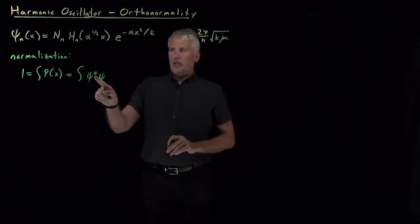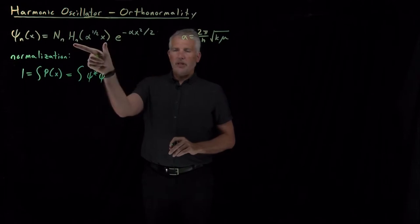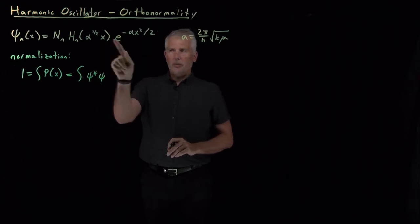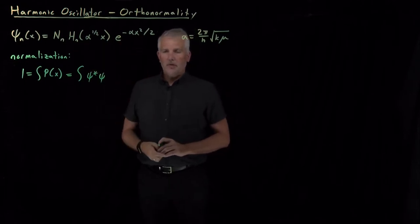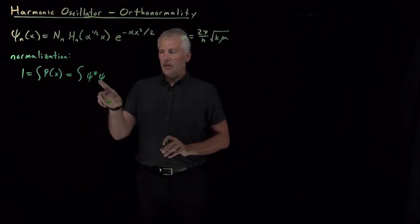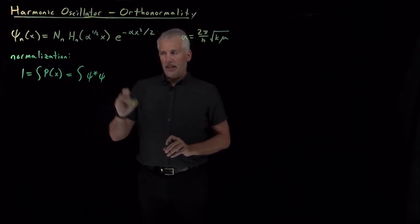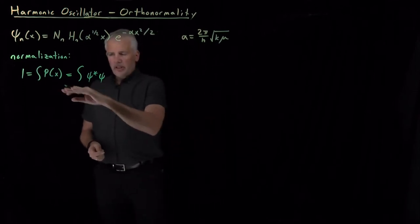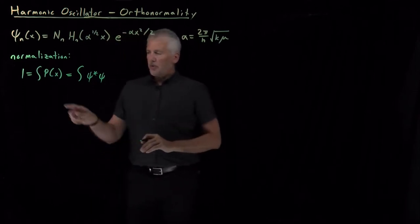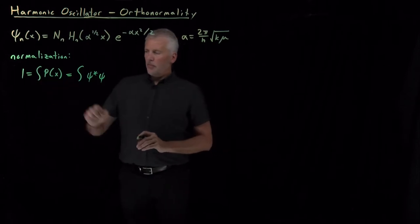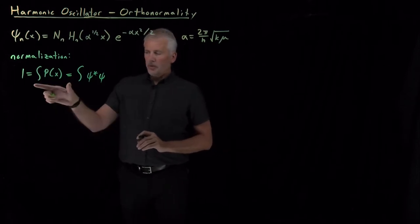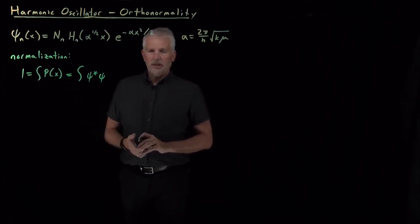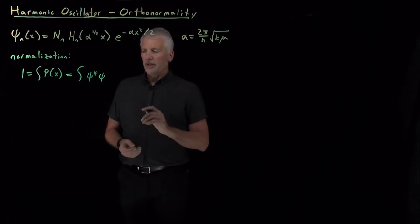The complex conjugate we don't have to worry about too much in this case, because neither the Hermite polynomial nor the Gaussian involves any i's — any square roots of negative 1. So complex conjugation is not needed for the harmonic oscillator wave functions because they're not complex. We'll do one example of this, the simplest one we can think of, because normalization is not particularly fun, and watching someone normalize a wave function is certainly not fun.